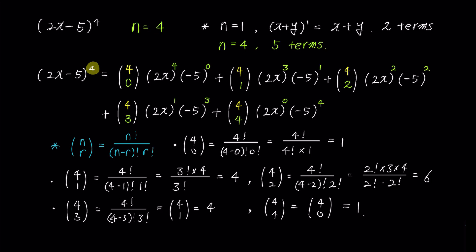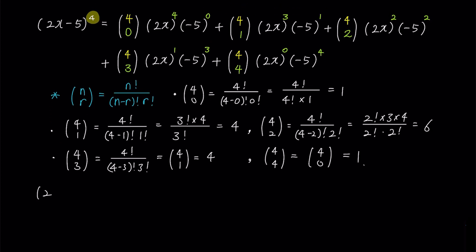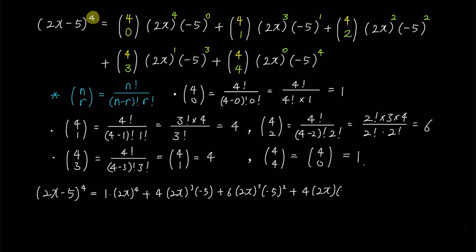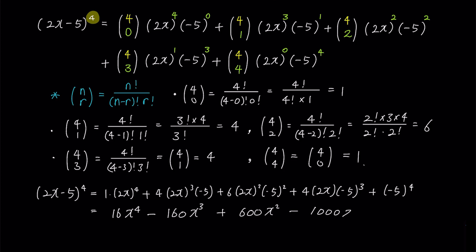Now, shall we find the answer? By plugging in the combination values we found, we get 1 times (2x)^4 plus 4 times (2x)^3 times (-5) plus 6 times (2x)^2 times (-5)^2 plus 4 times (2x) times (-5)^3 plus (-5)^4. If we simplify each term, we get 16x^4 minus 160x^3 plus 600x^2 minus 1000x plus 625.